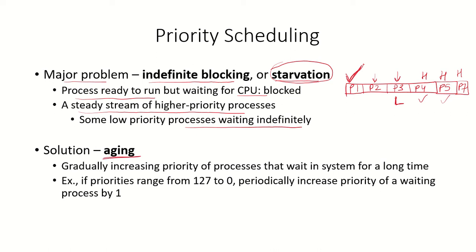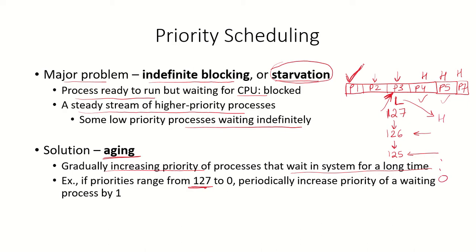One solution to starvation is aging, where the priority of waiting processes is gradually increased over time. For example, a process with priority 127 will be increased to 126 after one second, then to 125, and so on. By the time it reaches priority 0, it becomes a high-priority process and will not be left waiting indefinitely.